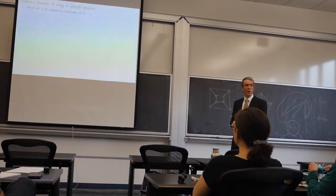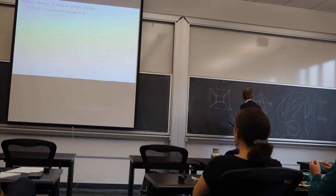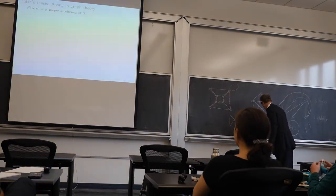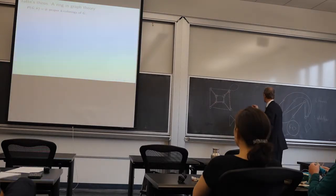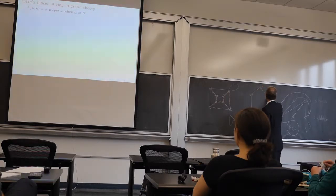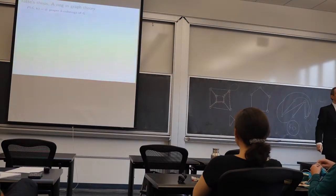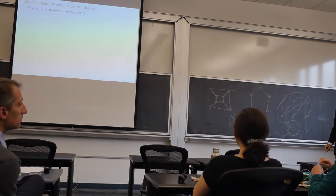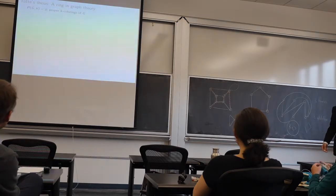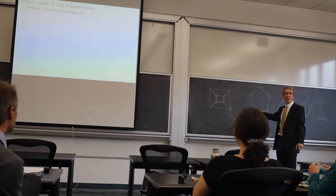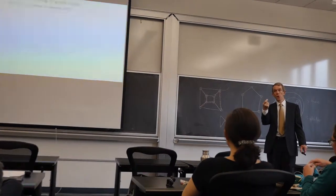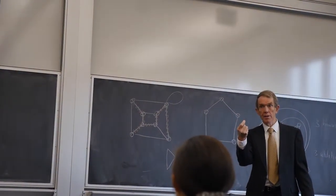Tutte said that he wondered if complexity or tree number could be characterized by the above identity alone and decided that it could not. Here's another instance where deletion-contraction occurs. I want to color the vertices of a graph and I want to do it with k colors. I'd like to color the vertices of this graph with the smallest number of colors as I can.